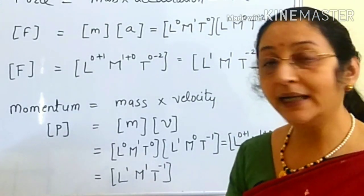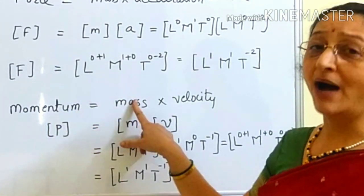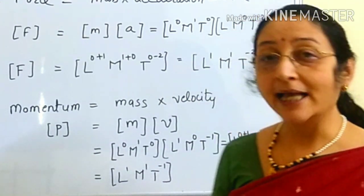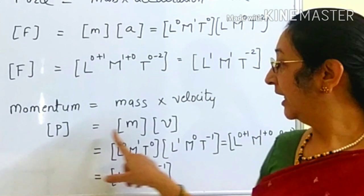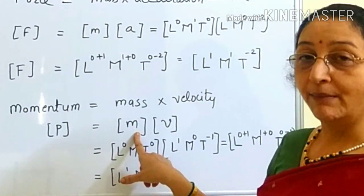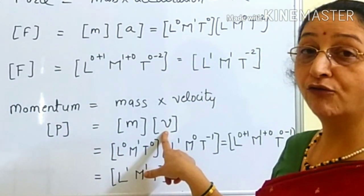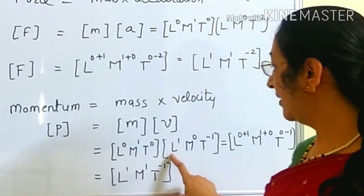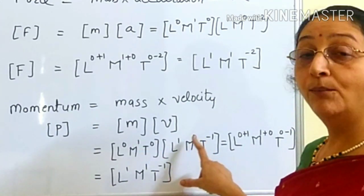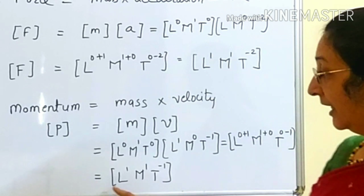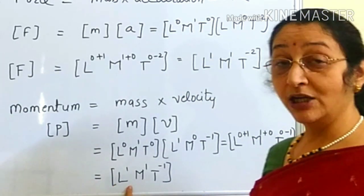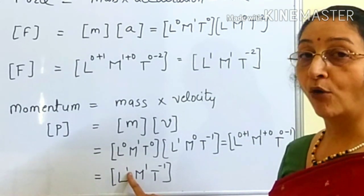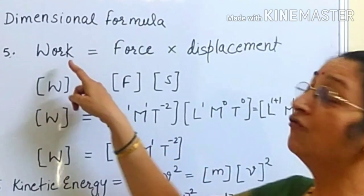Now we go for momentum. We know that momentum is mass into velocity, and the symbol for momentum is usually P. In box bracket we write P equal to the dimension for mass M and the dimension for velocity V. Adding the powers of both, we get the dimension for momentum as L to the power 1, M to the power 1, and T to the power minus 1.